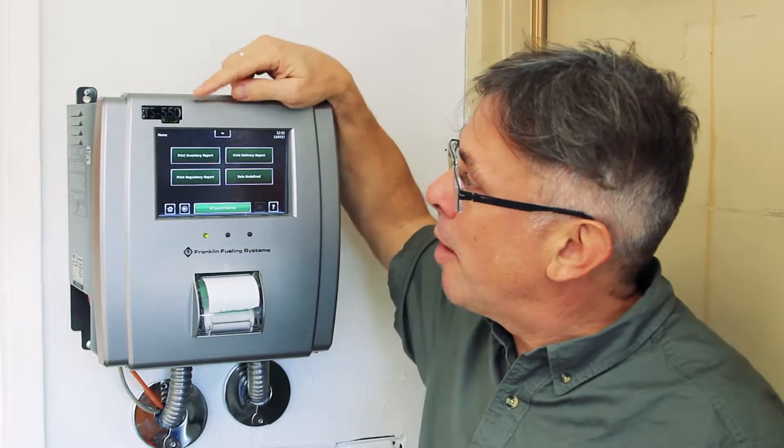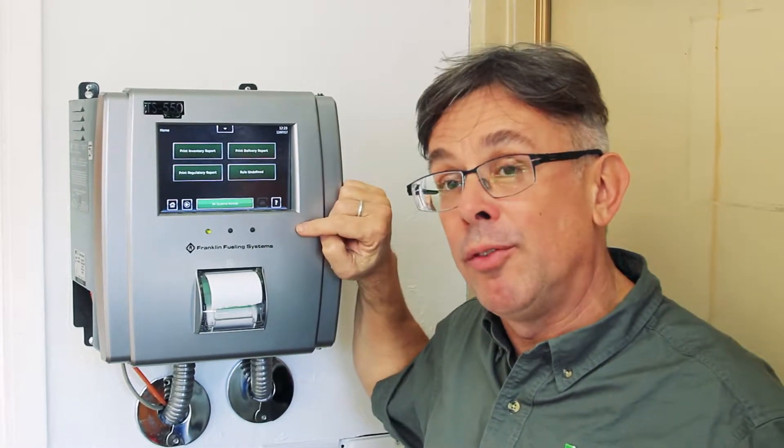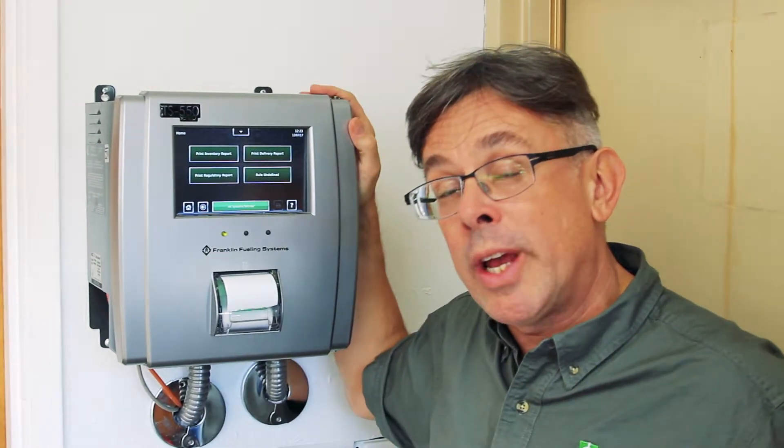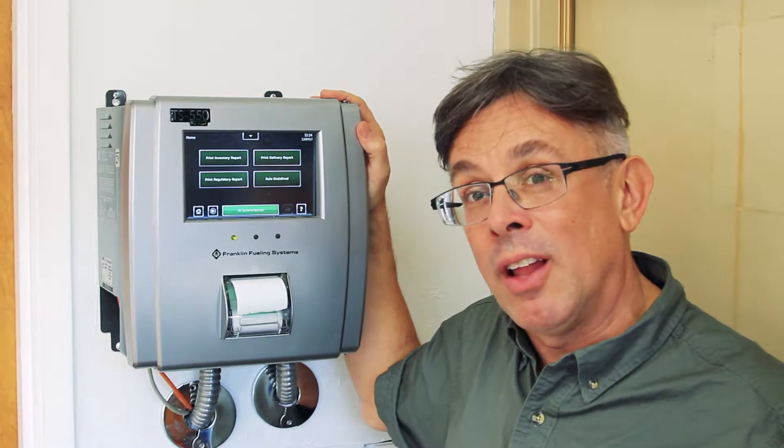Hi, this is Ben Thomas with UST Training and this is a Tank Savvy Minute. If you have an EVO 550 by Franklin Fueling System and you want to know, do we have a mechanical or an electronic blind leak detector?